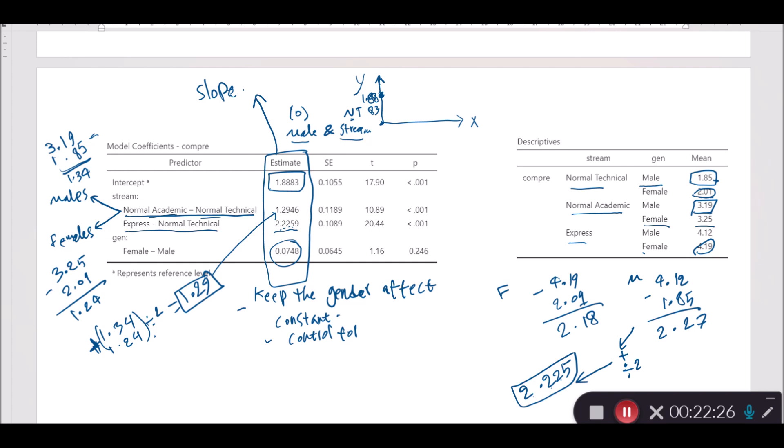Now are these estimates or slopes significantly different or not? Well yes, quite a few of them are significantly different. The intercept is significantly different. We're comparing the intercept with zero here and asking whether this intercept, which is 1.8883, is significantly different from zero. In this case the answer is yes, it's significantly different from zero because of the p-value as you see here. The second p-value represents the statistical significance associated with this analysis, normal academic versus normal technical. This one is also statistically significant. The first one is, the second one is, and the third one is also statistically significant. But gender doesn't have any impact on the variance in the comprehension, which is your dependent variable.